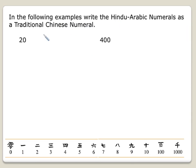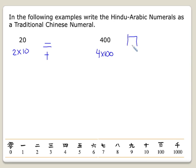We want to write Hindu-Arabic numerals as traditional Chinese numerals, thinking in expanded form. So 20 is 2 times 10 — we write the symbol for 2 above the symbol for 10, which is just a cross. For 400, that's 4 times 100, so we write the symbol for 4 — the shopping cart — above the symbol for 100.